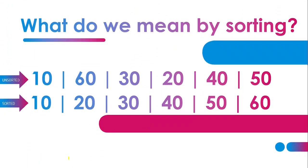Before trying our hands in bubble sort, the question arises: what do we mean by sorting and why do we need to learn sorting? The answer lies in this example. The first row is an unsorted array and the second row is a sorted array. After applying bubble sort, all the elements would be arranged in ascending order — this is the outcome of applying bubble sort or any sorting algorithm.